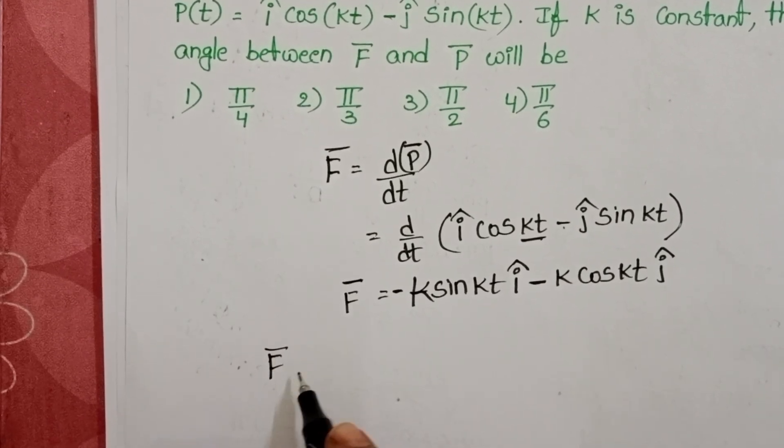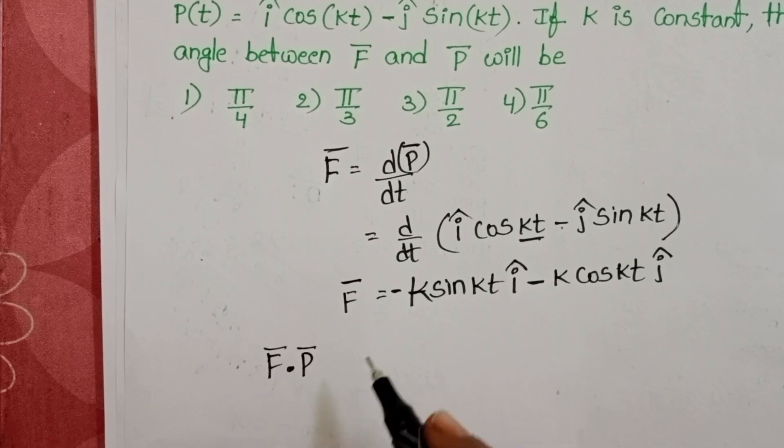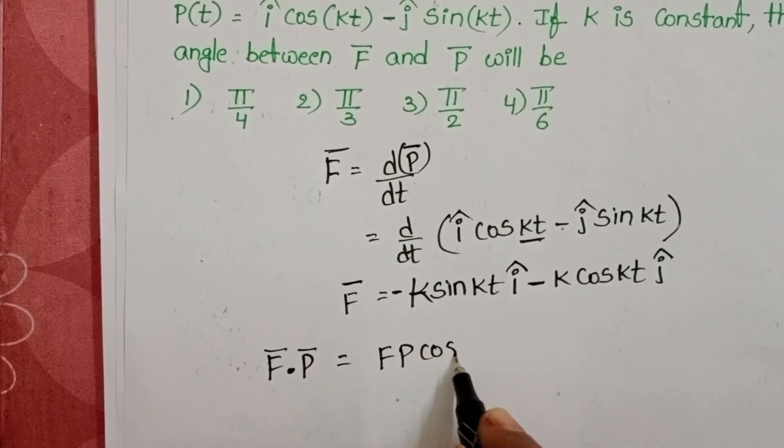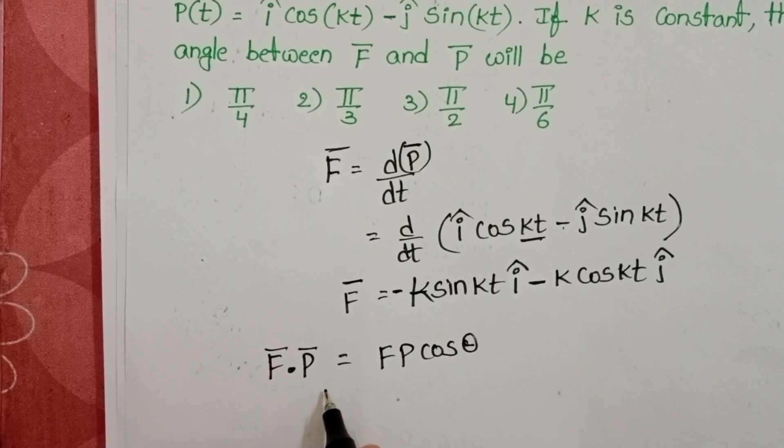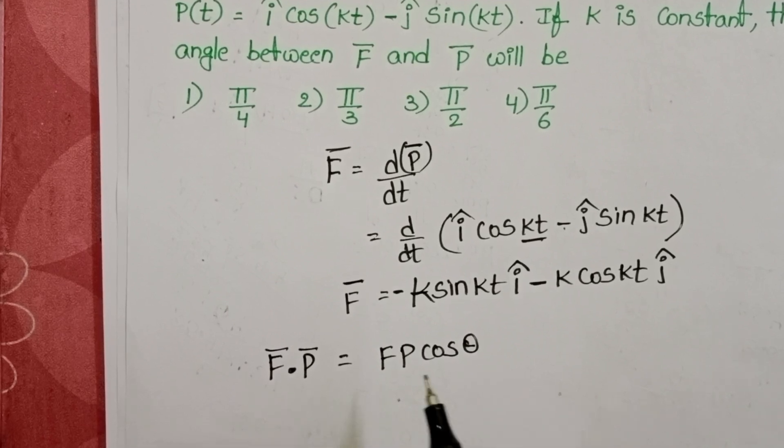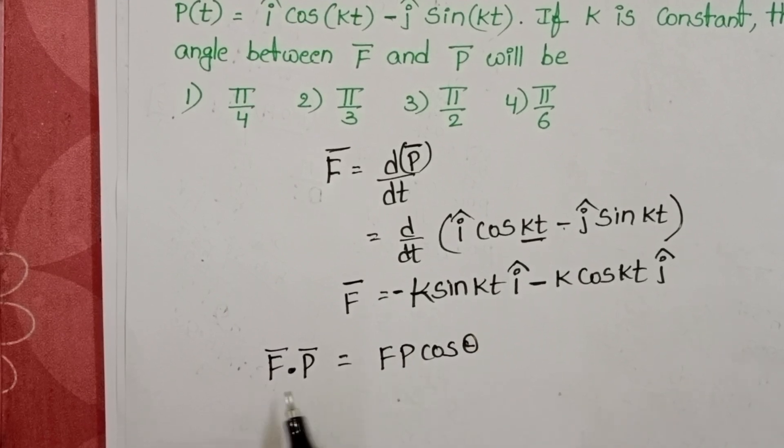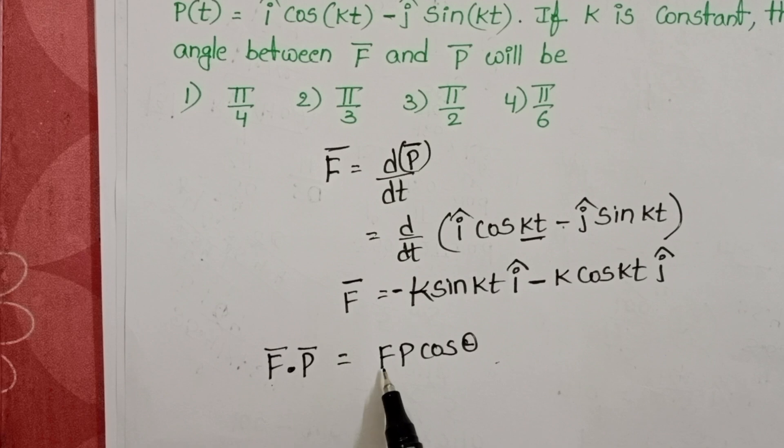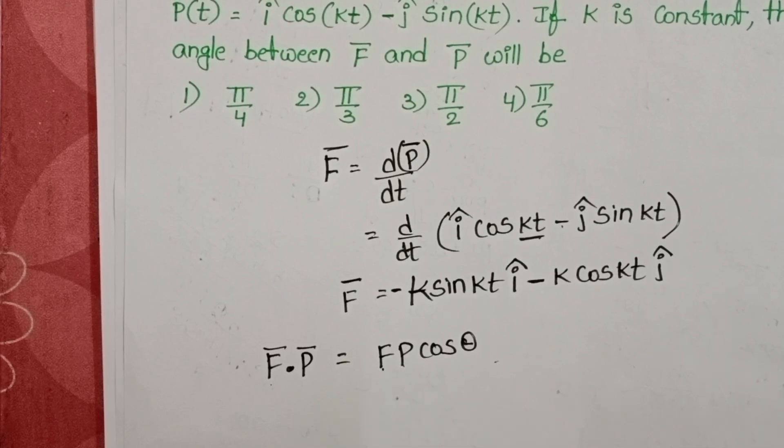Now, dot product of force and momentum is equals to FP cos theta. Why we are taking dot product? Because we want to find the angle between the two given vectors. So, take the dot product F bar dot P bar equals FP cos theta, where F is magnitude of the force, P is the magnitude of the momentum.